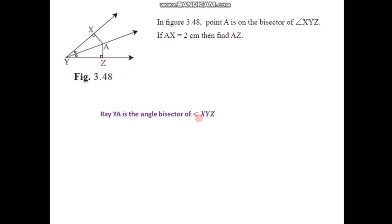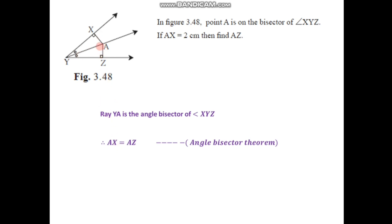Ray YA is the angle bisector of angle XYZ. We have just studied the property of the angle bisector theorem — if there is any point on the angle bisector of a certain angle, it is equidistant from the two sides of that angle. So here, point A is on the angle bisector and must be equidistant from side XY and side YZ of angle XYZ.